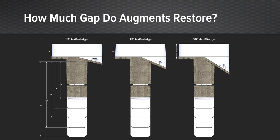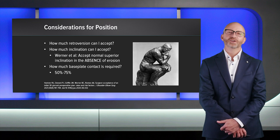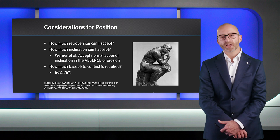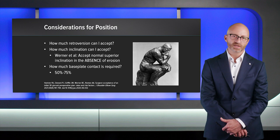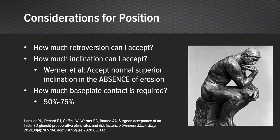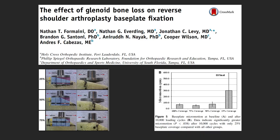We need to consider what implant position parameters we'll accept, and this will vary based on your interpretation of the literature. How much retroversion can I accept? In my view, about 10 degrees. How much inclination can I accept? If we do not have glenoid erosion, we can typically accept the normal superior inclination. How much base plate contact is required? This varies between 50 and 75% in the literature. Looking at a study examining contact area of a base plate with a central screw — similar to the MGS — as little as 50% contact was acceptable, with a real increase in displacement only when contact dropped to 25%. So with a threaded implant, 50% is acceptable in most cases.